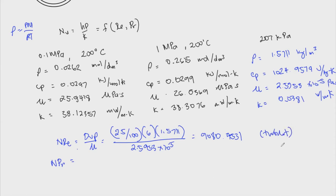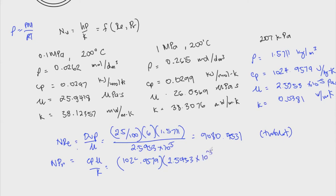And then the Prandtl number is Cp·μ/k. We have Cp = 1024.9579, μ = 2.5953×10⁻⁵, and k = 0.0381. This gives a Prandtl number of 0.6982 — dimensionless.